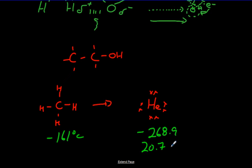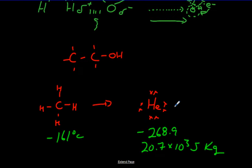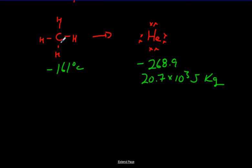The latent heat of vaporization of helium is 20.7 kilojoules — so 20.7 times 10 to the 3 joules per kilogram. Compare that with water and ethanol — a major, major difference. It's important to understand and be able to predict what these values will be and why. We would expect methane to also be fairly low. Now we're talking just about vaporization, but the same thing happens from solid to liquid as well — the same principles apply, though the actual values and temperatures are different.